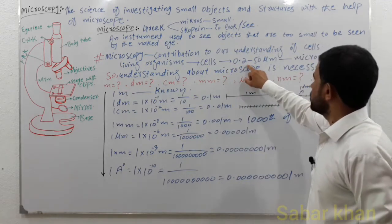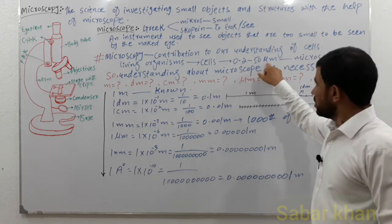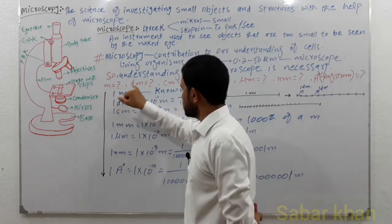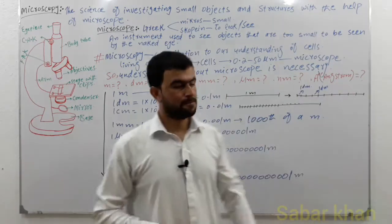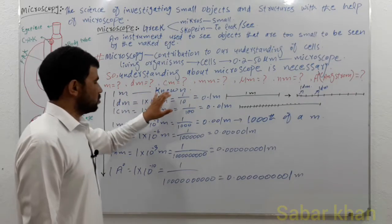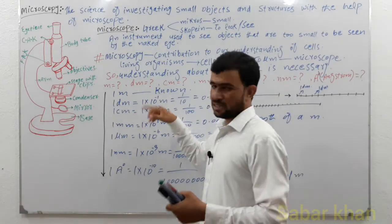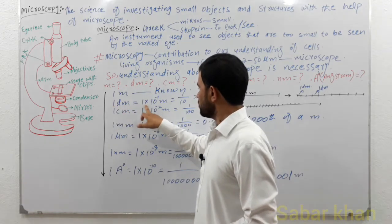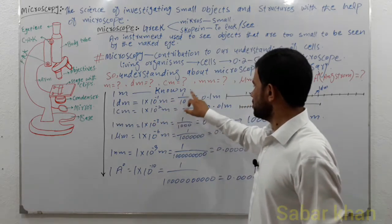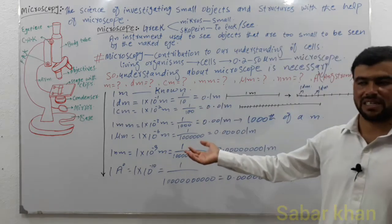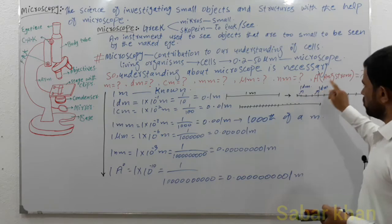The cell size ranges from 0.2 to 50 micrometers. Many students get confused about the units: meter, decimeter, centimeter, millimeter, micrometer, nanometer, and angstrom. One decimeter is equal to 1×10⁻¹ meter, which equals 1 divided by 10, equal to 0.1 meter. When we take one meter and divide it by 10, each part will be equal to one decimeter.